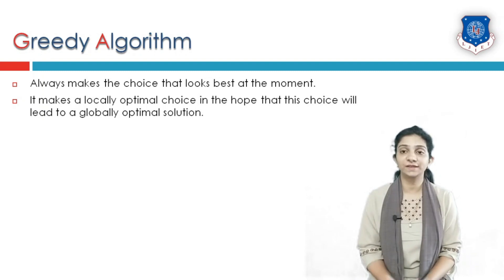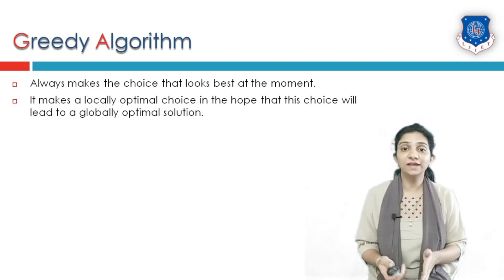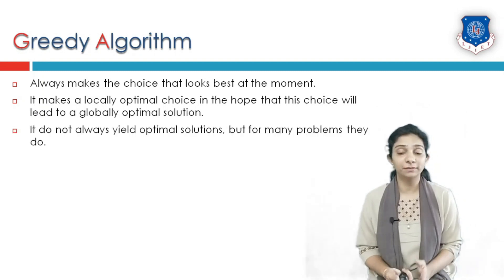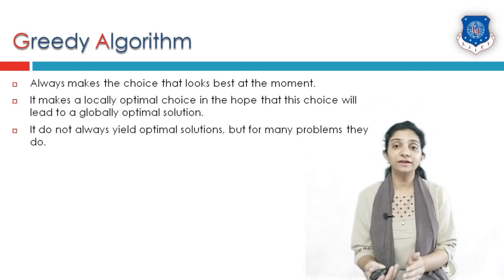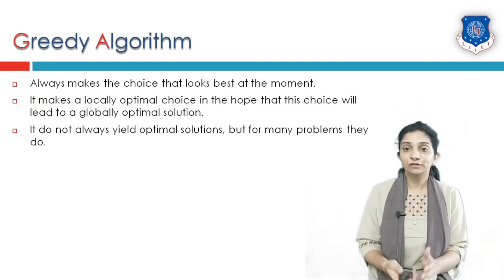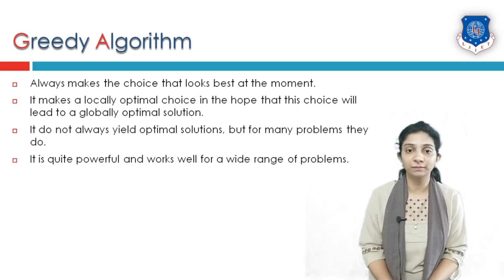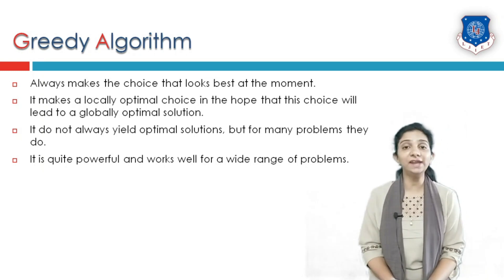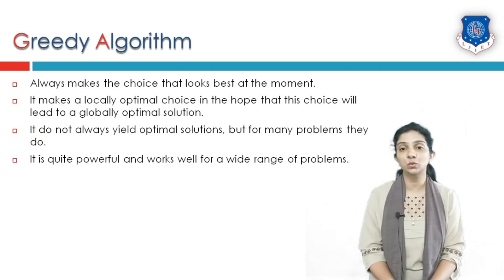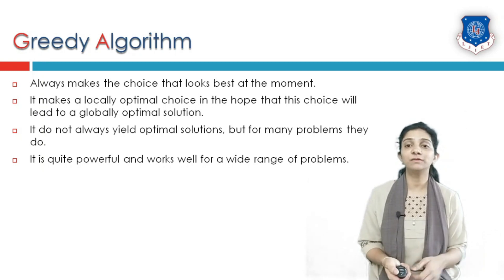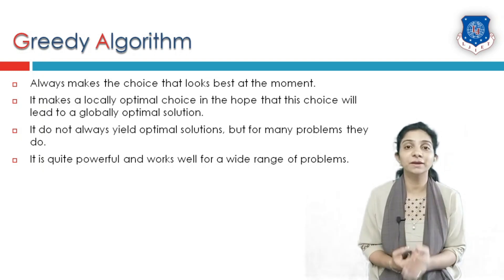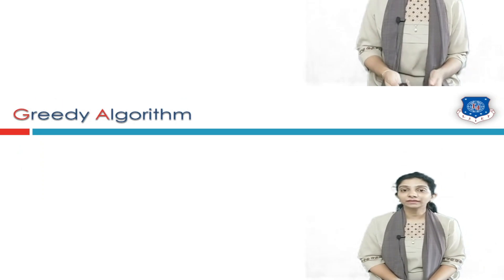It makes a locally optimal choice — whatever decision seems correct at this particular moment will be taken as is. It does not always produce an optimal solution. A decision which is correct at the moment might not be the most beneficial after some point of time. For many problems, greedy does produce an optimal solution, but it is not guaranteed. It works very well for a wide range of problems where you need an optimal or near-optimal solution.